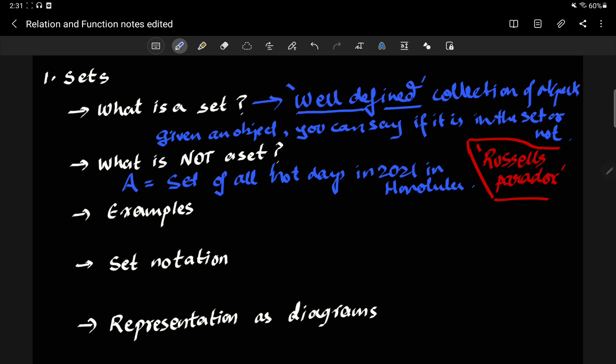But you can make a bunch of examples like set of even natural numbers. That is very well-defined. For example, 71 is not in the set. Why? Because it's not even. 100 is in the set. Pi is not in the set. Because it's not a natural number. And so on.